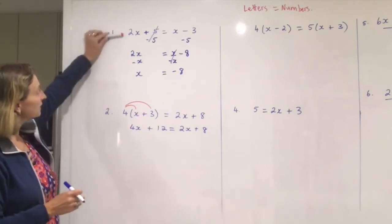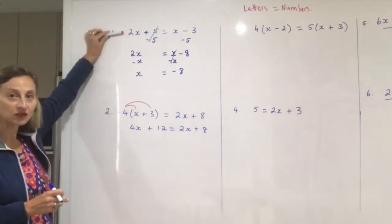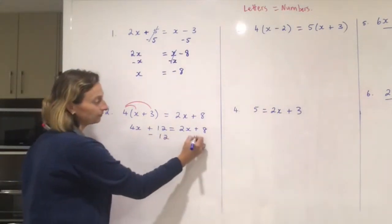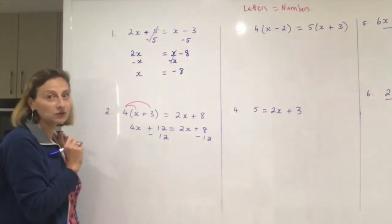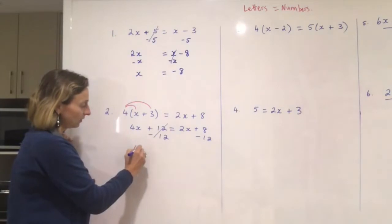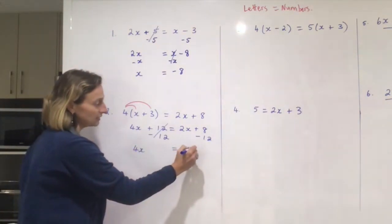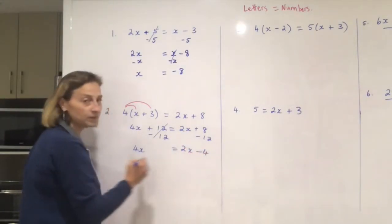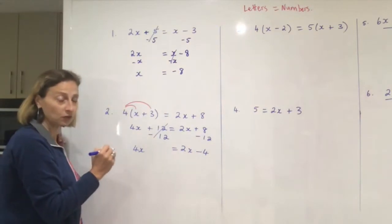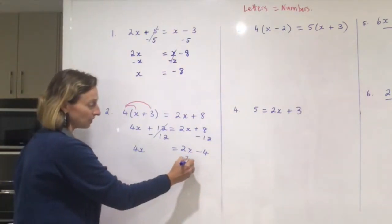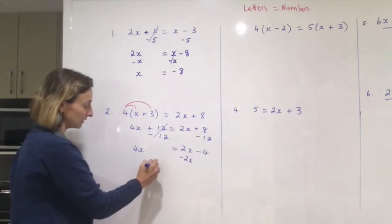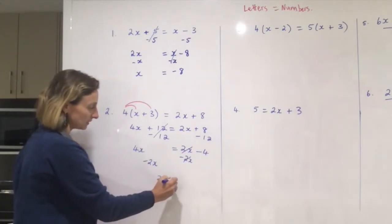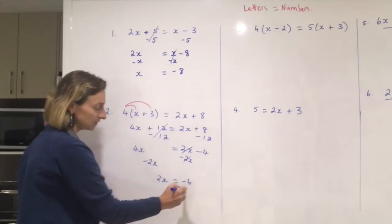Now it becomes just like the first question and we just have to move things around. I like to get rid of the minus twelve first — it doesn't matter what I do first as long as what I'm doing is correct. I'm left with four x equals — the two x stays there — and plus eight minus twelve is minus four. Don't write plus four, it's minus four. Then I need to get rid of my letter on the right and move it over to the left. Four x minus two x is two x, and the minus four stays there.